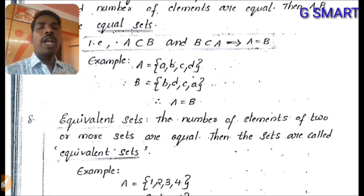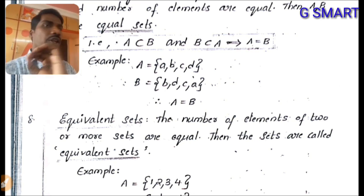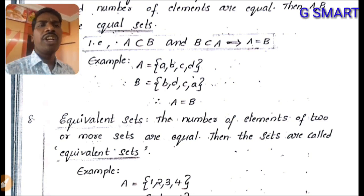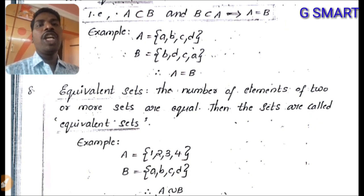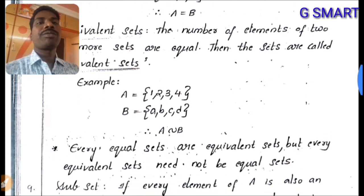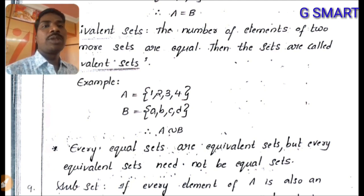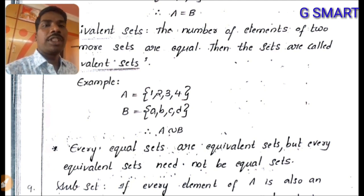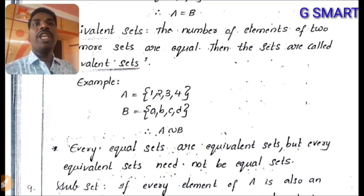Equivalent sets vs equal sets: if the number of elements of two or more sets are equal, they are called equivalent sets. If the number of elements AND the elements themselves are the same, that is called equal sets. Example: {1, 2, 3, 4} and {A, B, C, D} are equivalent sets; {A, B, C, D} and {B, D, C, A} are equal sets. Every equal set is an equivalent set, but every equivalent set need not be an equal set.